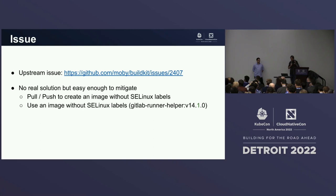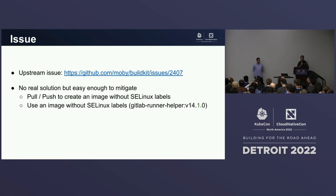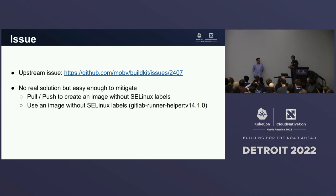So this is the issue — we opened an issue upstream. There's no magic fix, but it's pretty easy to mitigate: either you remove the SELinux attributes by pulling and pushing the image, or you use an image without any SELinux labels, which is what I'd recommend. We were lucky in that the release just after the one we were using actually didn't have the labels anymore.